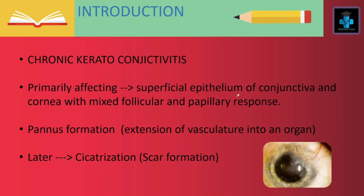Trachoma is also known as chronic keratoconjunctivitis. It primarily affects the superficial epithelium of the conjunctiva and cornea with mixed follicular and papillary responses. It also causes pannus formation — the extension of vasculature into an organ — and later causes cicatrization, otherwise known as scar formation.